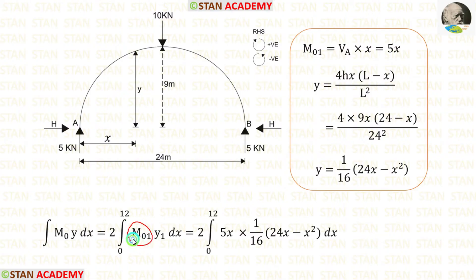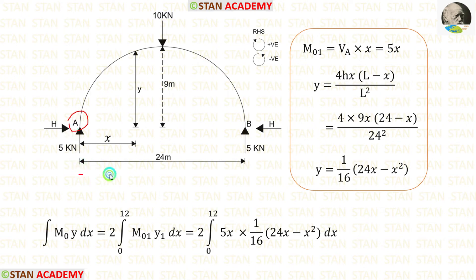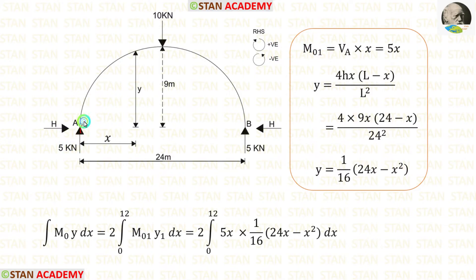Now let us calculate M₀₁. M₀ is the moment about the section without considering the horizontal thrust. Up to the section we have only one load — the vertical reaction Va. We calculate M₀₁ from point A, moving towards the right. Clockwise is positive and anti-clockwise is negative. The vertical reaction Va acts clockwise, so it is positive, and the distance is x, giving M₀₁ = 5x.